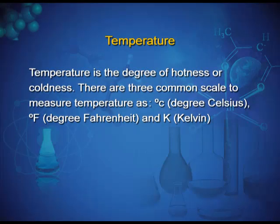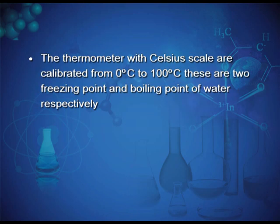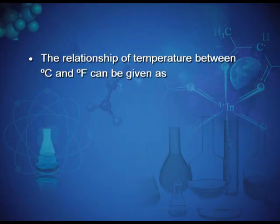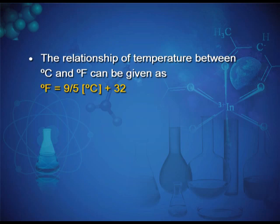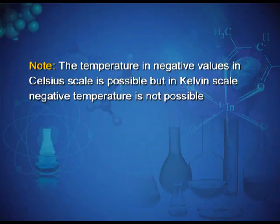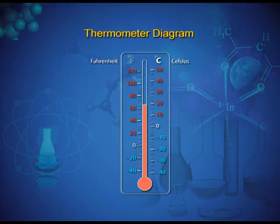Temperature is the degree of hotness or coldness. There are three common scales to measure temperature: degree Celsius, degree Fahrenheit, and Kelvin. The Celsius scale is calibrated from 0°C to 100°C, representing the freezing and boiling points of water respectively. The Fahrenheit scale ranges from 32°F to 212°F. The relationship between Celsius and Fahrenheit is: °F = (9/5)°C + 32. The Kelvin scale relates to Celsius as: K = °C + 273.15. Note that negative temperatures are possible in the Celsius scale but not in the Kelvin scale.